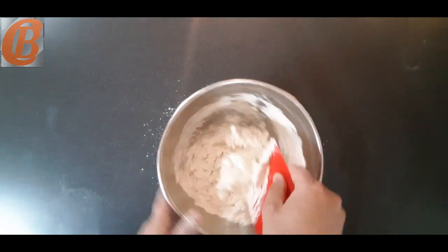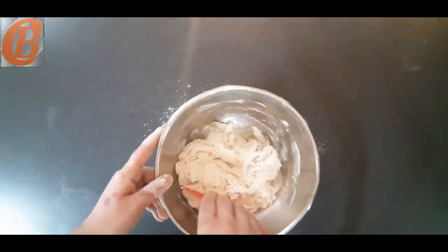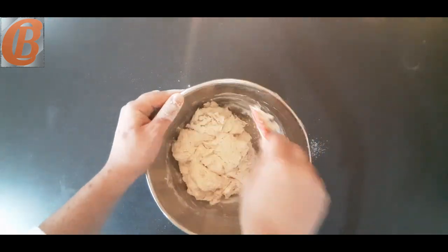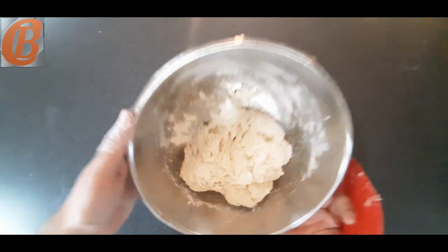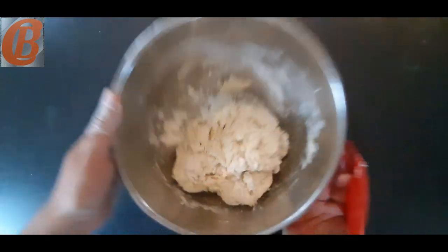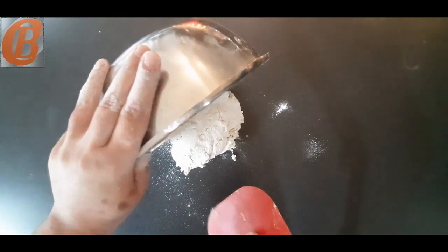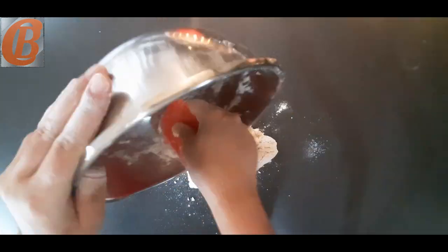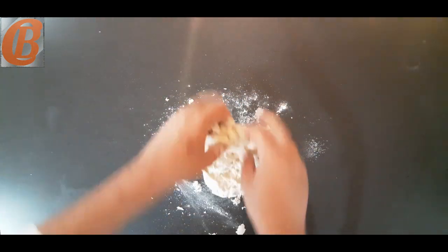Now we're just going to roughly mix all that together to form what's called a shaggy dough, that's just where it is roughly incorporated but it is not yet smooth. Then you can dump all that out on the table, scrape your bowl out and we'll begin the kneading process.